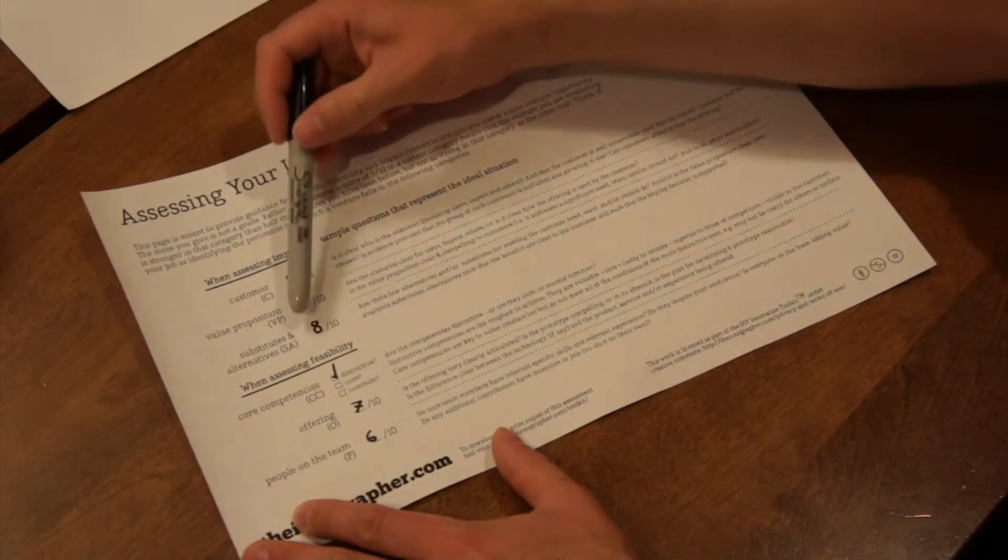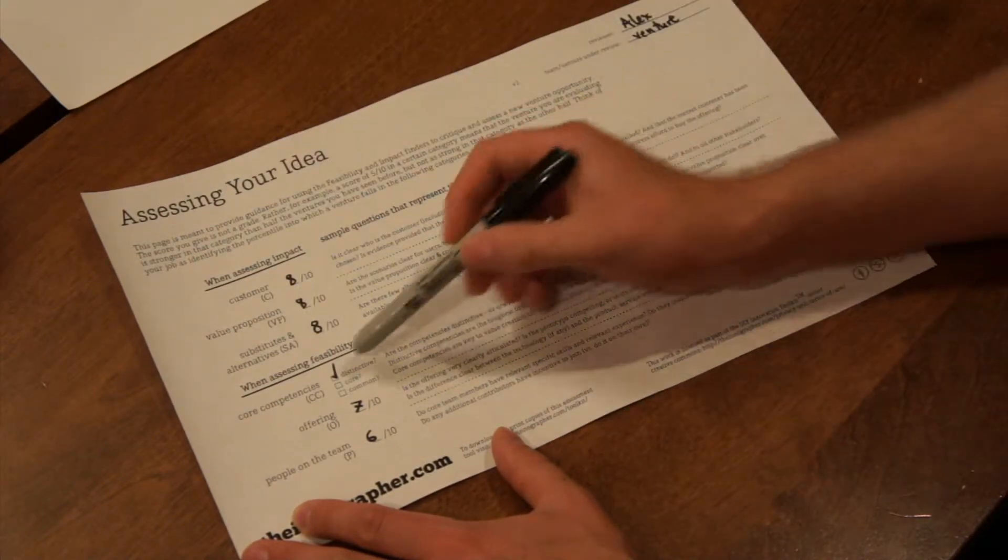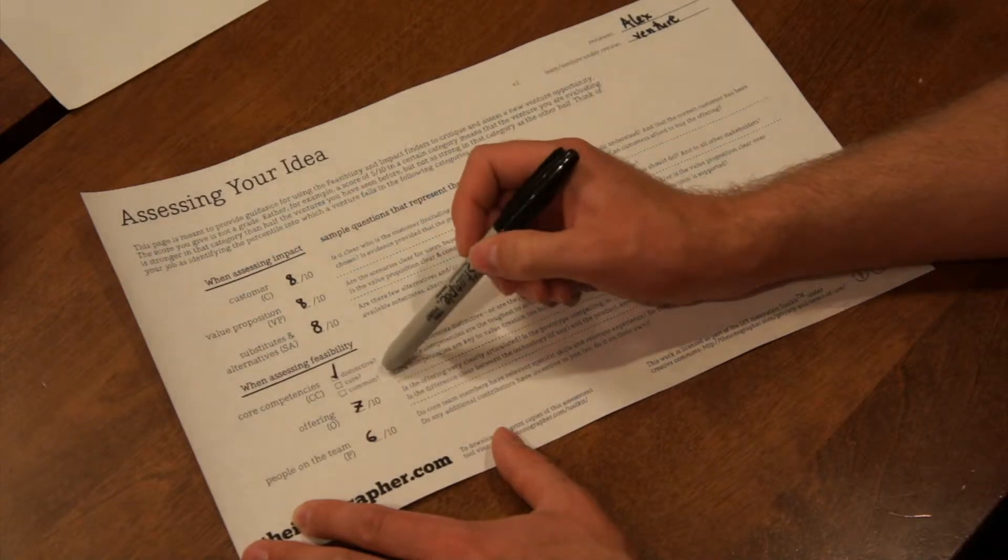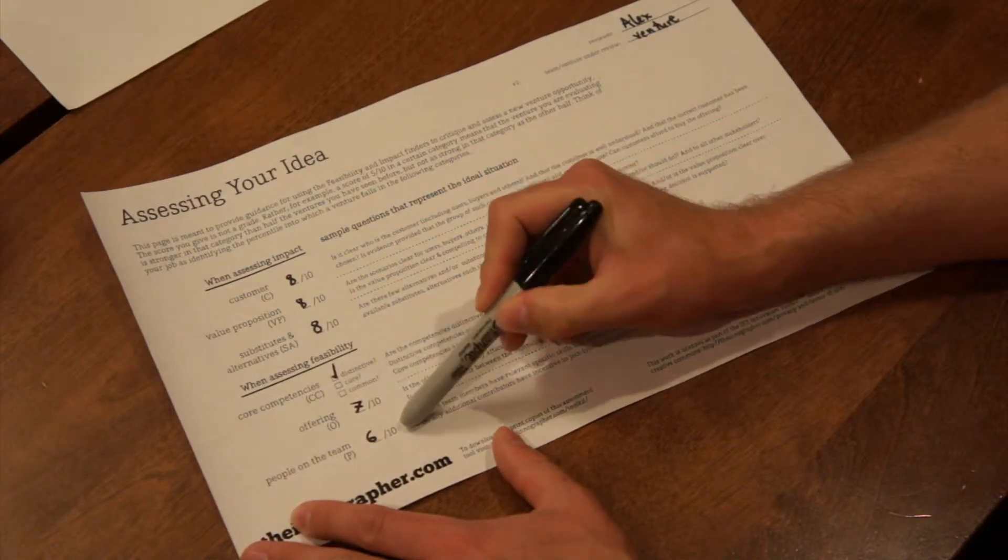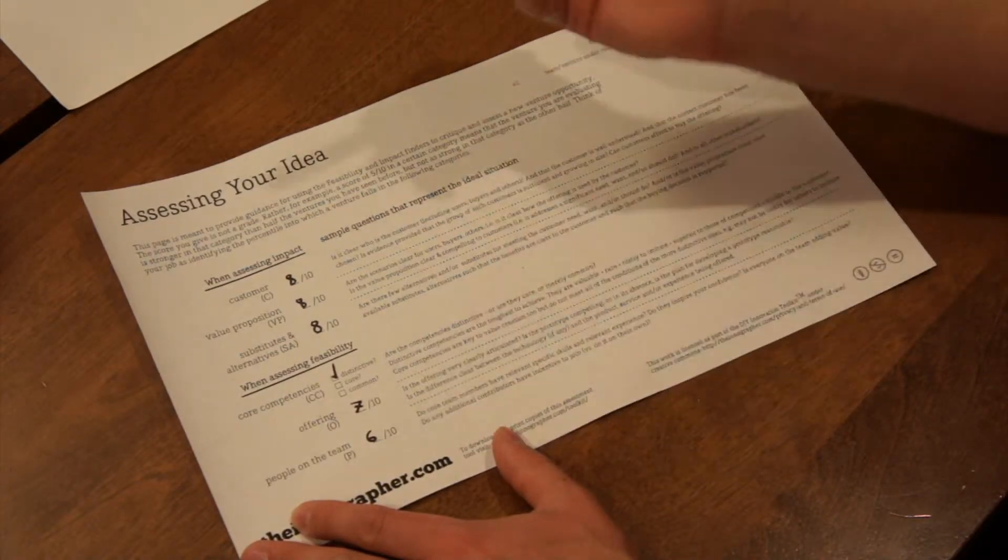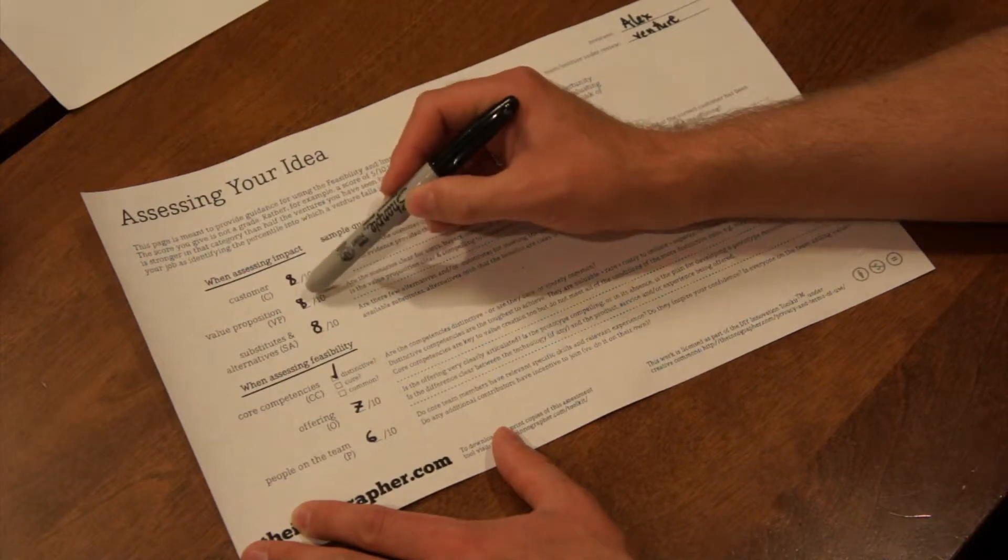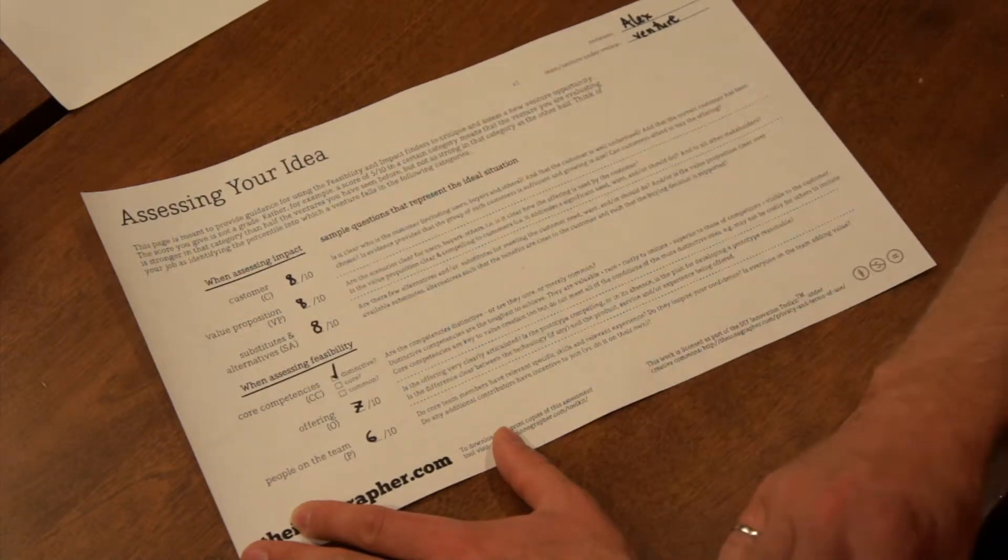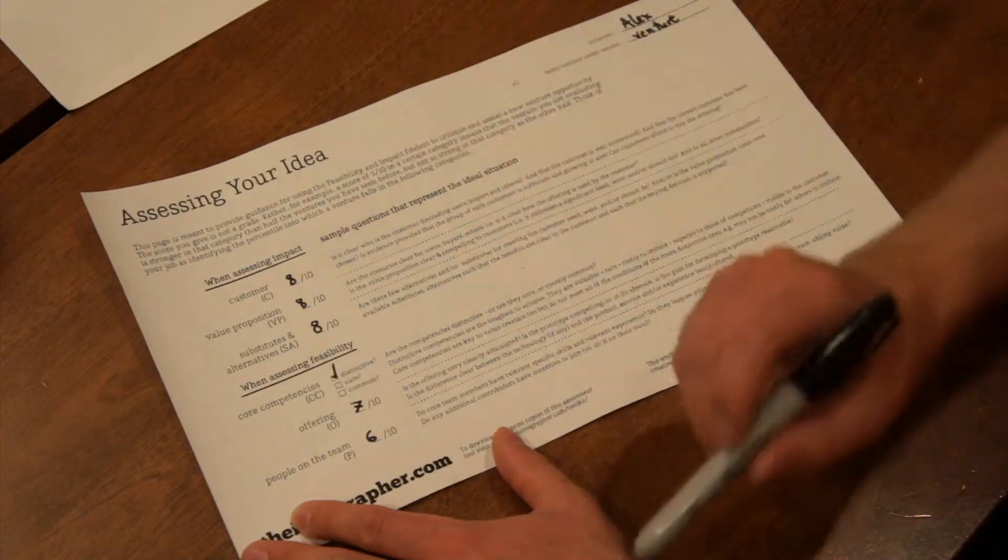strength of their value proposition, strength of their substitutes and alternatives, how their core competence looks, what their offering looks like and the people on the team. And I've given them scores here, eight on customer, eight on value proposition, eight on substitutes and alternatives, each out of ten.